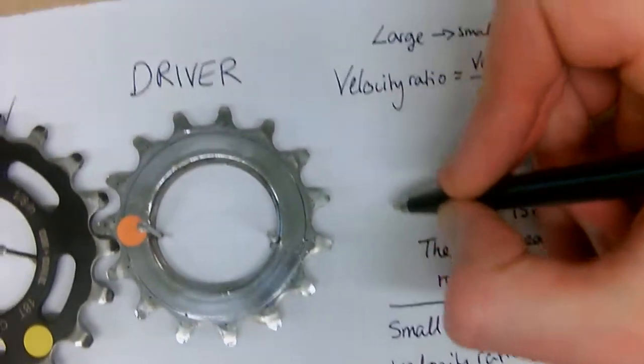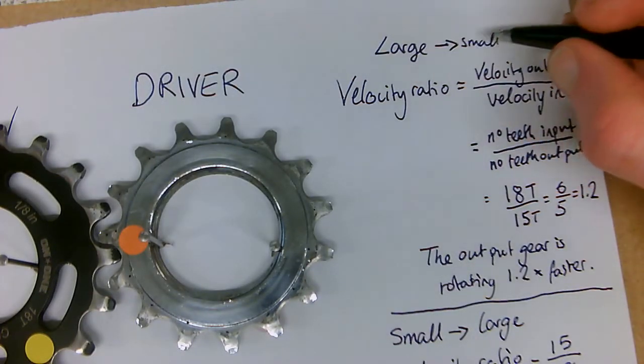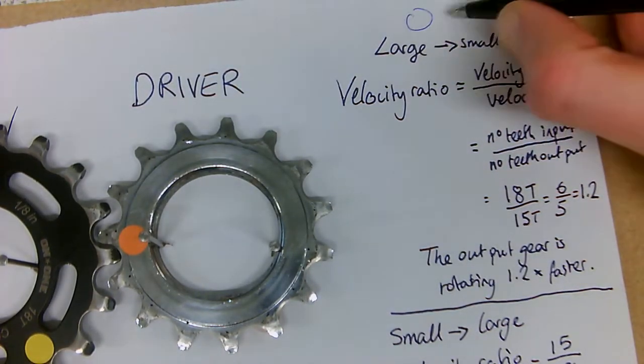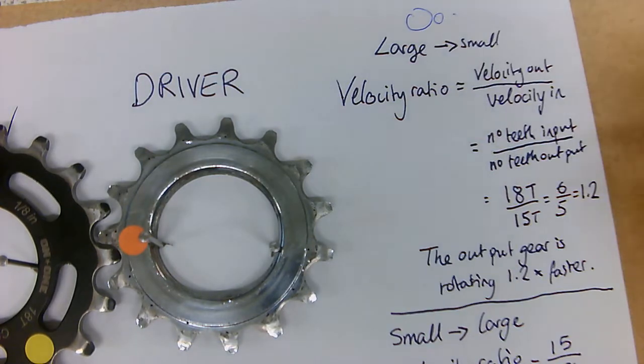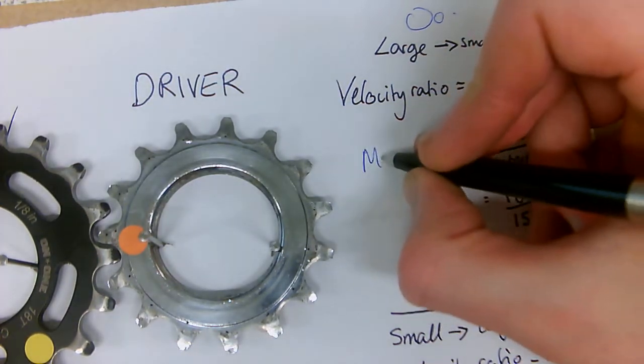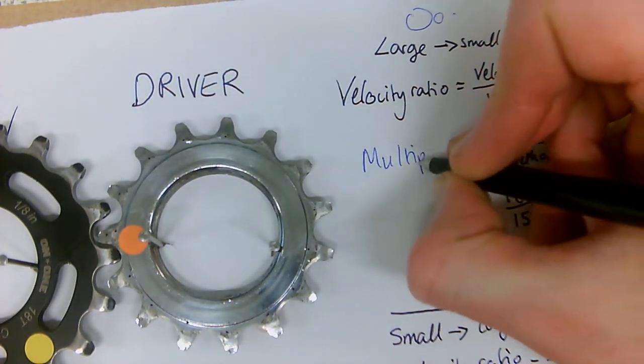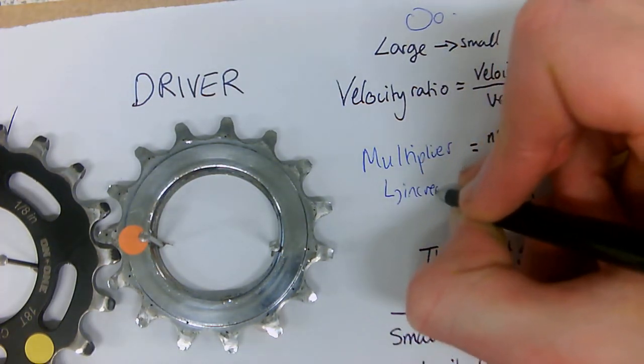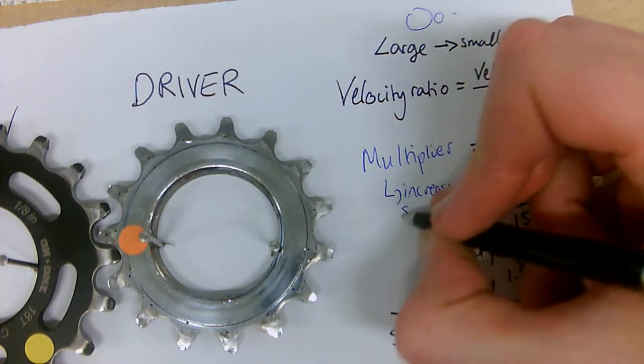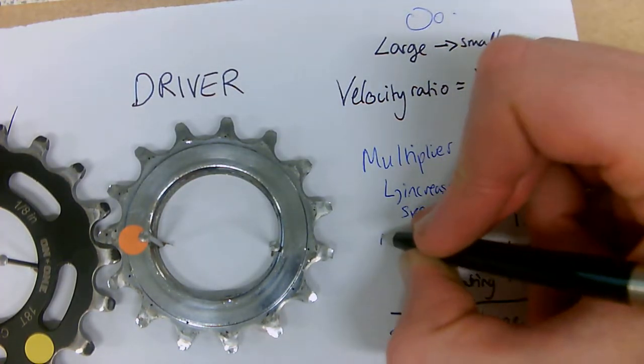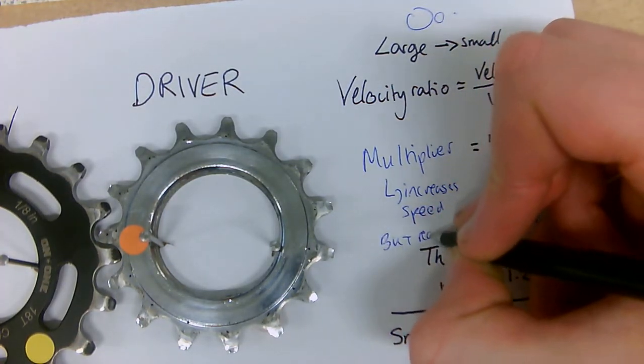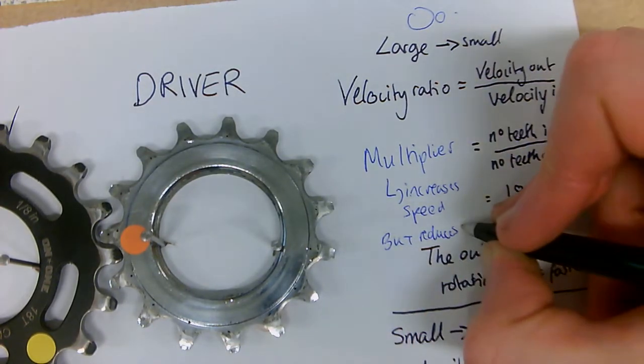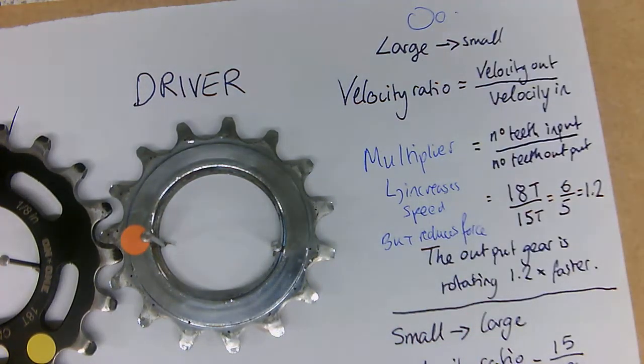And this one where we had the large cog paired, large cog linked to the small cog, is an example of a multiplier. It increases speed but reduces the force that we get at once.